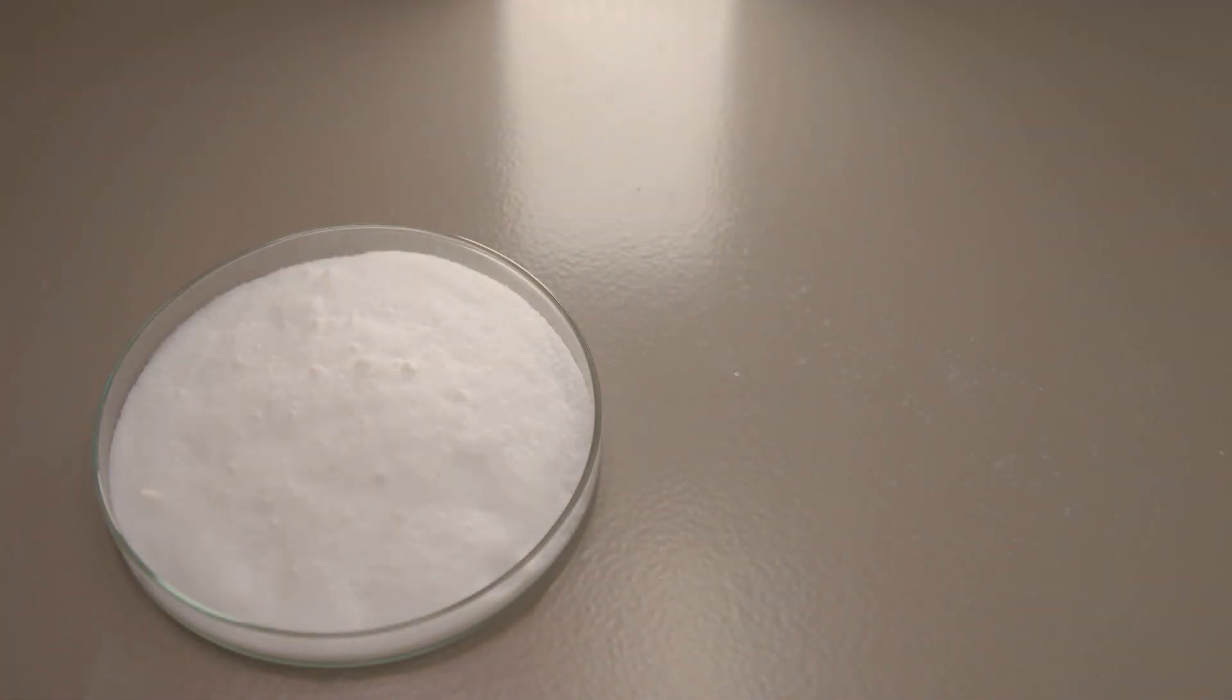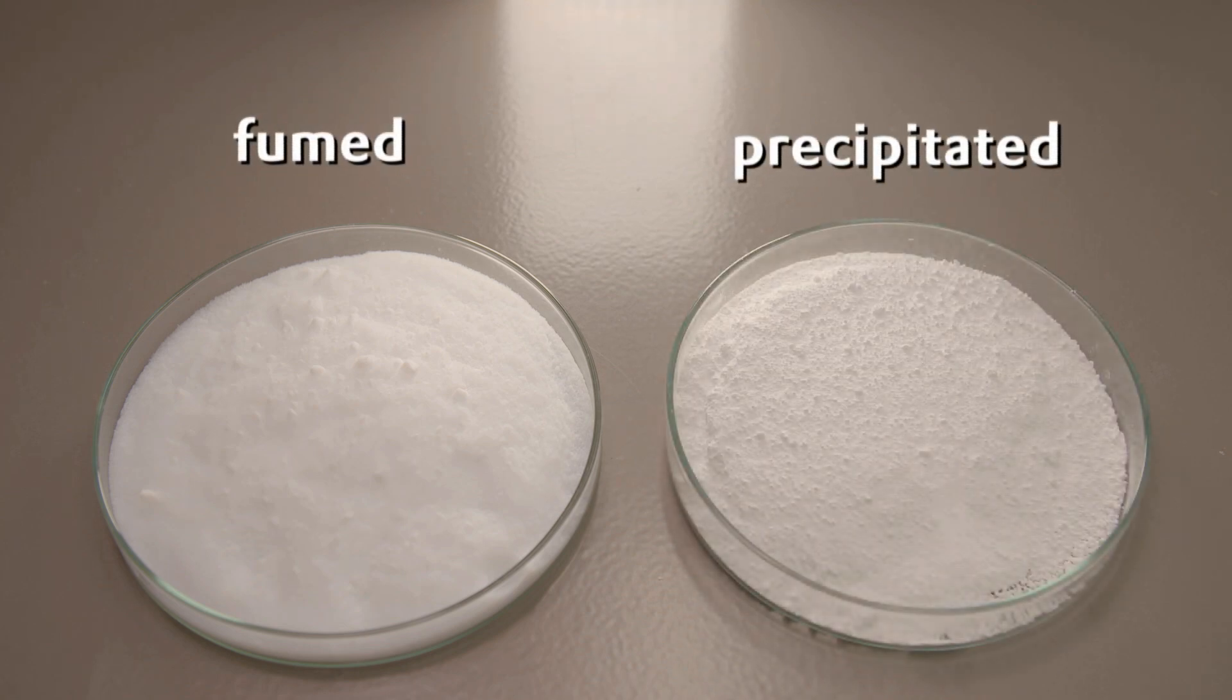On the basis of the production process, we distinguish between two types of silicas: fumed and precipitated silicas.